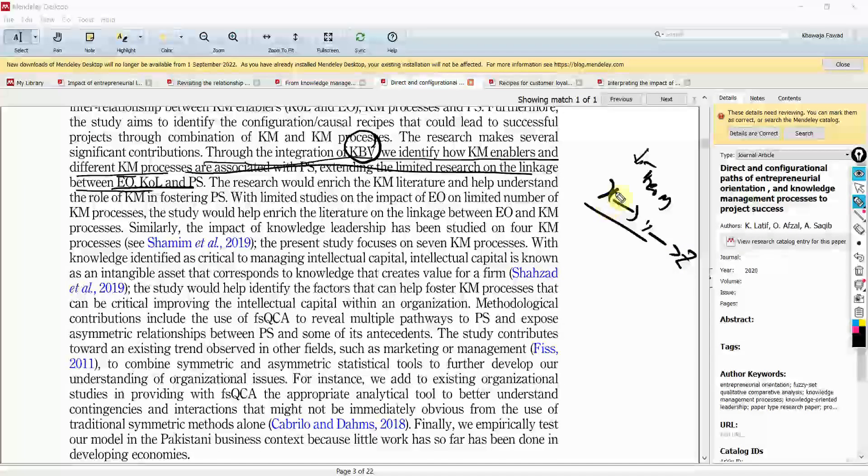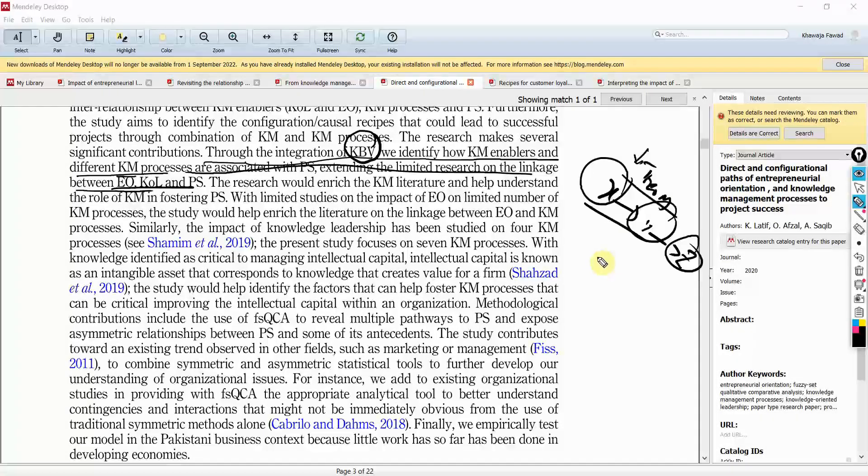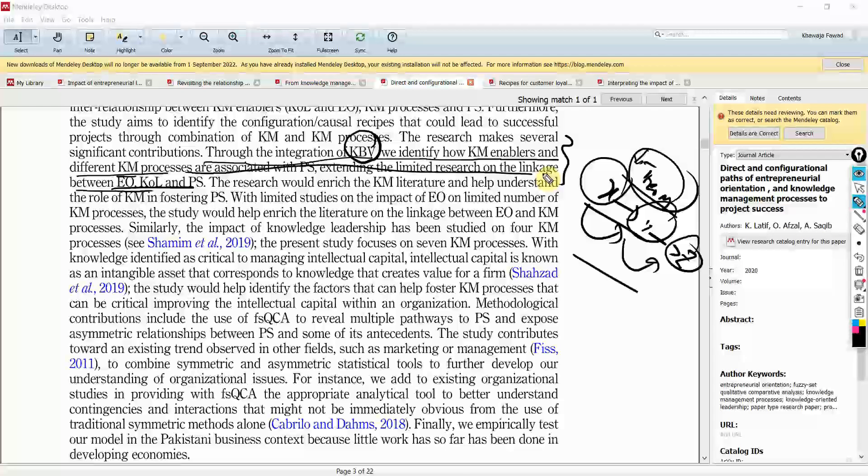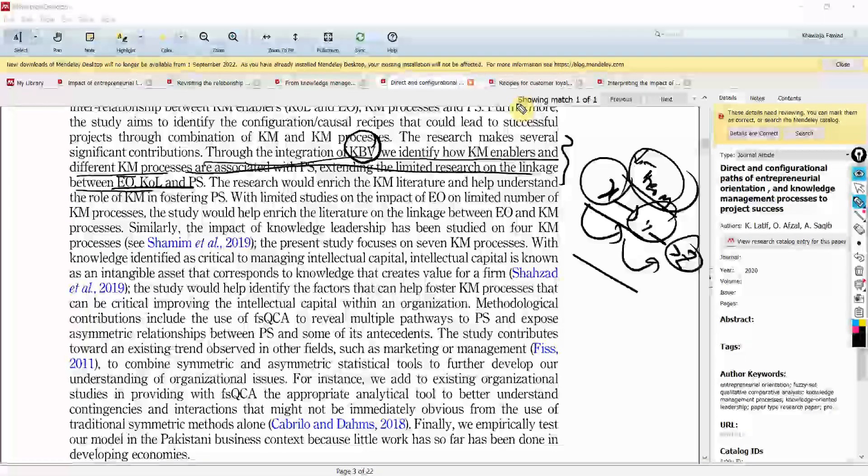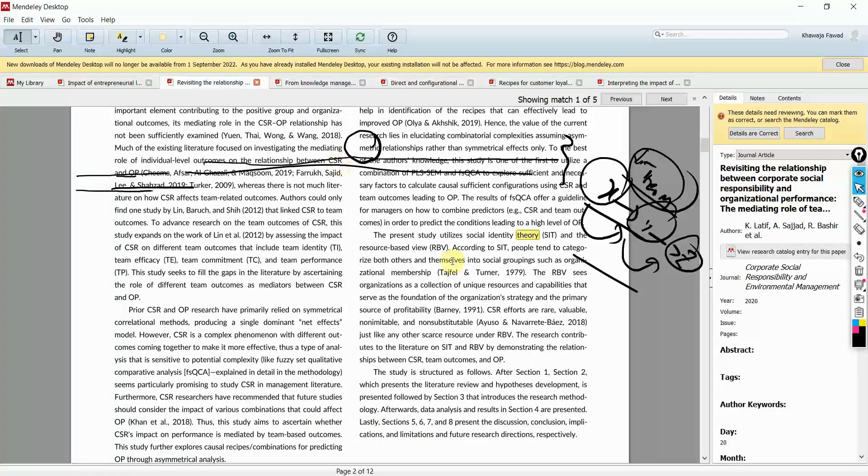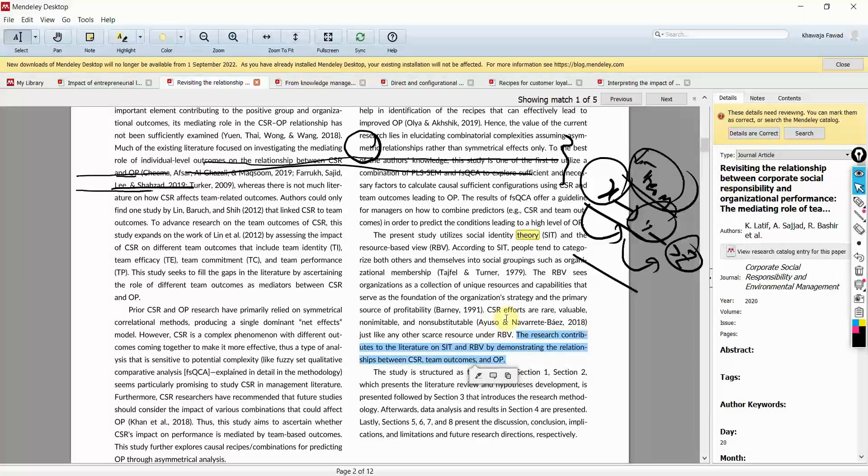This is how you write about the integration of the theory in your study with the relationships. So, what you are saying is that these relationships have not been studied in light of this particular theory. So, this particular theory is helping us explain these relationships. And this is your contribution. How to write about it? This is how you write about it. Again, we have seen in the previous example as well. Let's go back. Here it is. The research contributes to the literature on SIT and RBV by demonstrating the relationships. So, you are explaining the relationships based on these two theories.